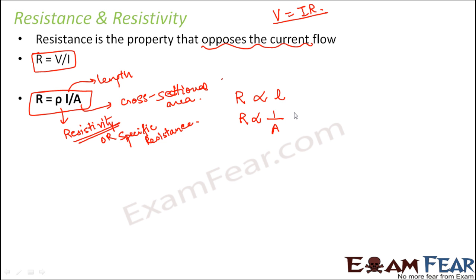The unit to measure resistance is the ohm, denoted by the Greek letter Ω. Resistance depends upon the length and cross-sectional area of the conductor, so two conductors of different lengths will have different resistances. Resistivity, however, is a value attached to a particular material — even if two wires have the same length and area, their resistivities differ because resistivity depends on the nature of the material.